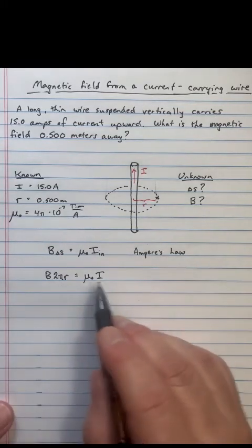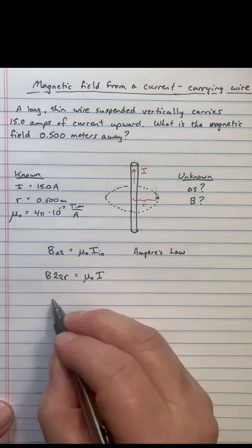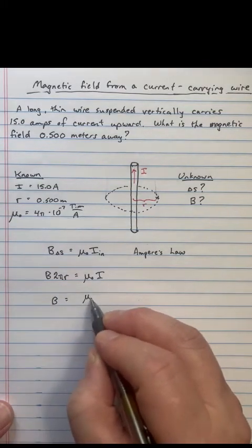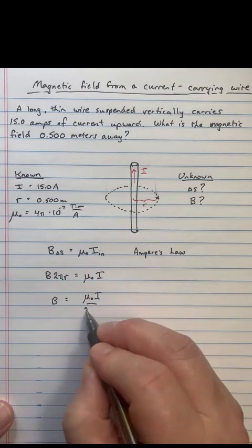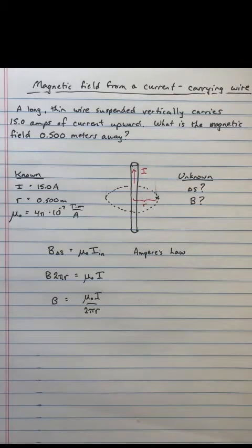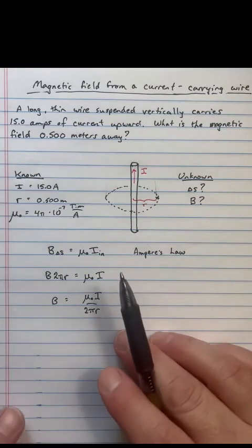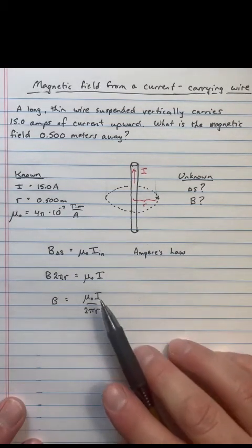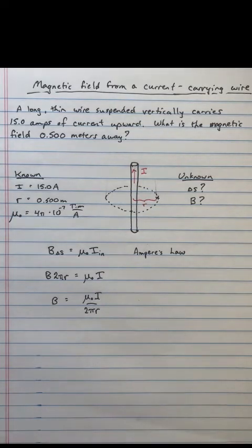So, with that in mind, let's solve for magnetic field. The math solution part of this is trivial at this stage. I do want to pause and comment real quick about the actual solution here. Now, in the past, when you've had fields, their strengths have been dependent on the square of the distance. Inverse square law.